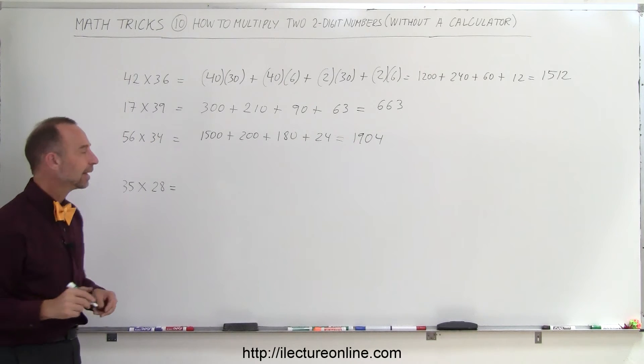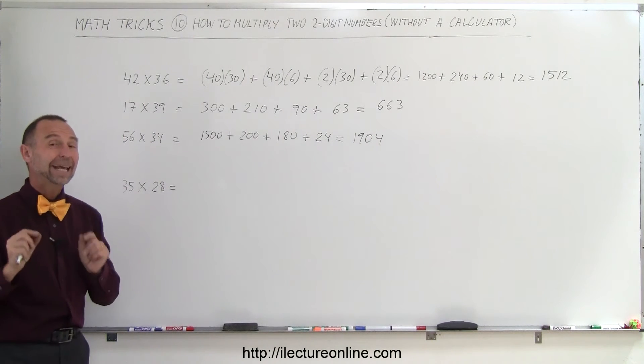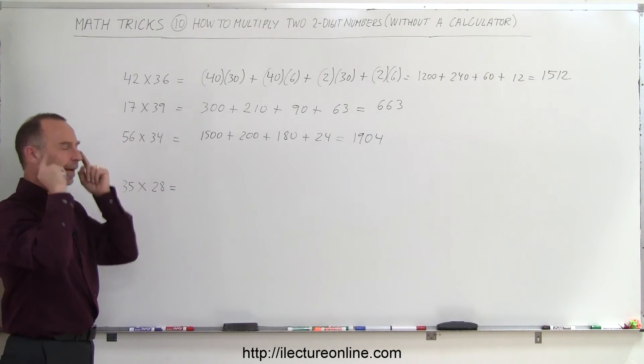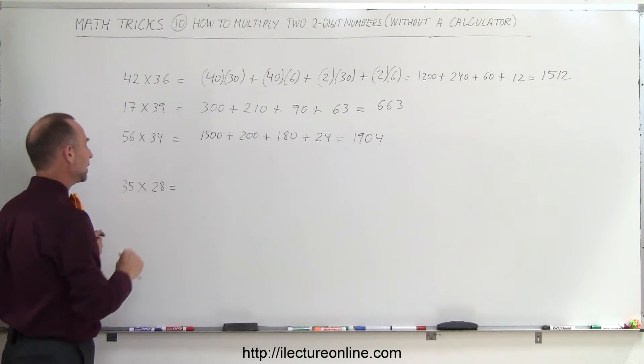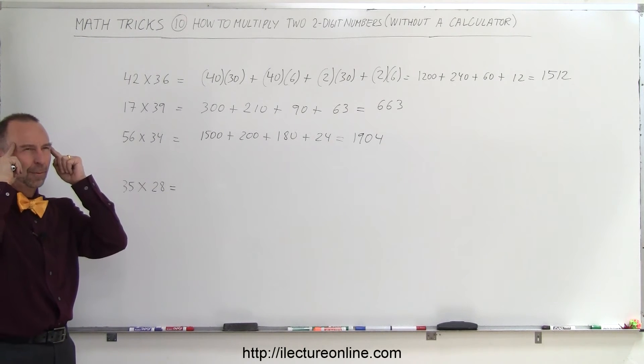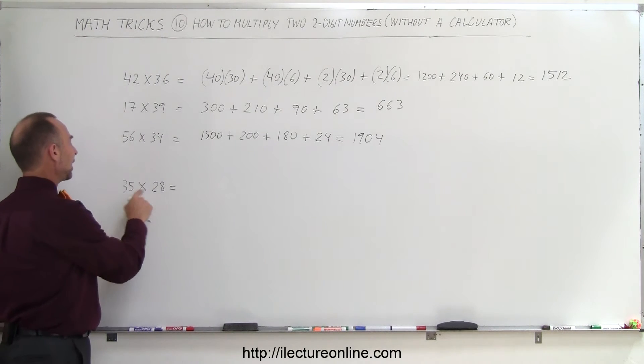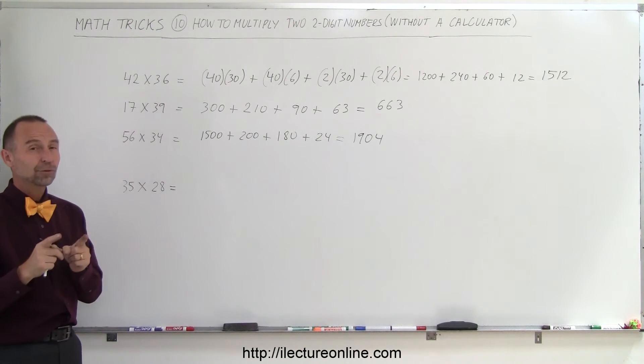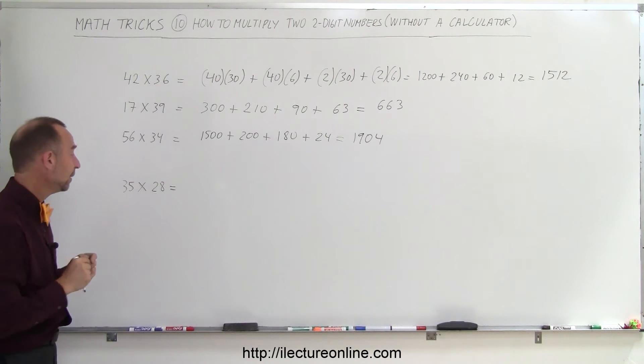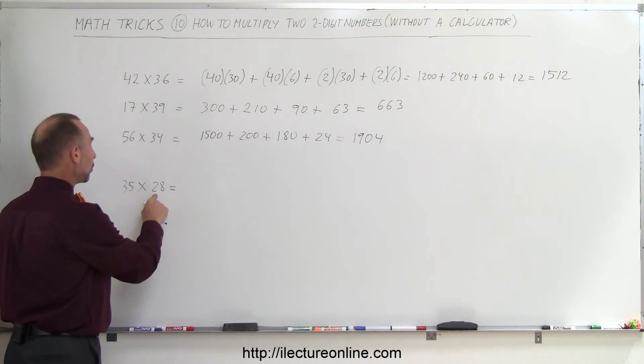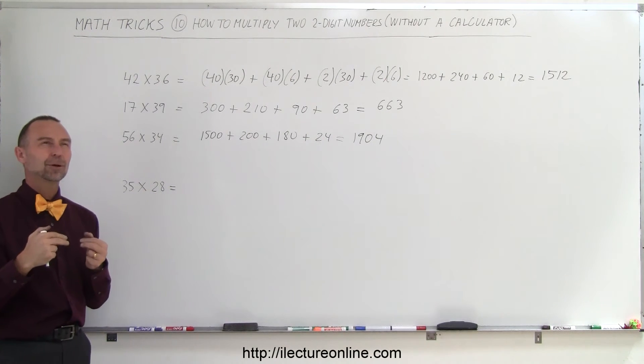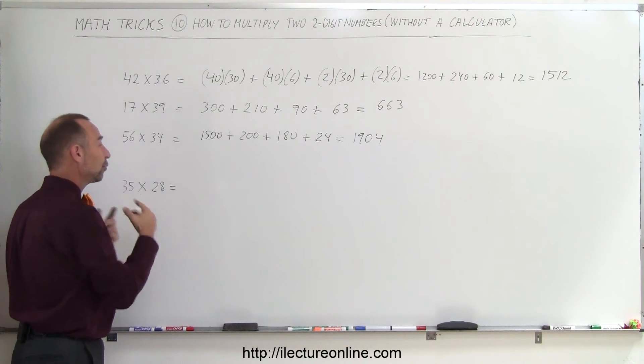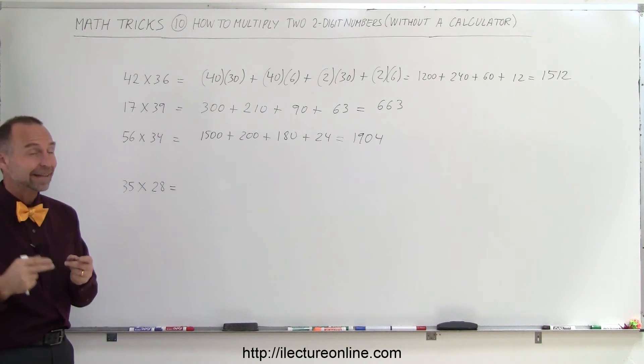And finally, I'm going to multiply these two together but not write anything down at all, just the answer. Let's see if we can keep things in our head. 30 times 20 is 600, we remember 600. 30 times 8, that would be 240, so 600 plus 240 is 840. Then we have 5 times 20, that's 100, 840 plus 100 is 940, and 5 times 8 is 40. 940 plus 40 is 980.